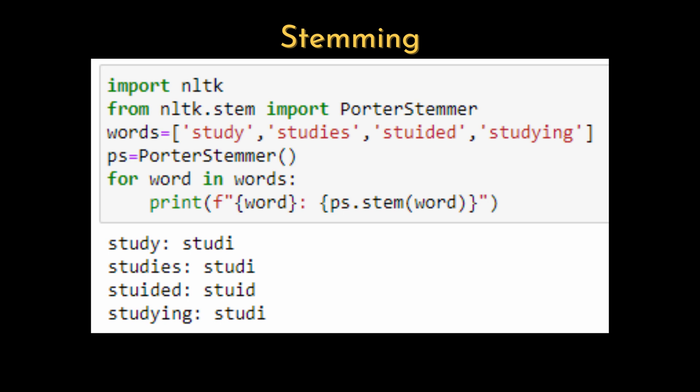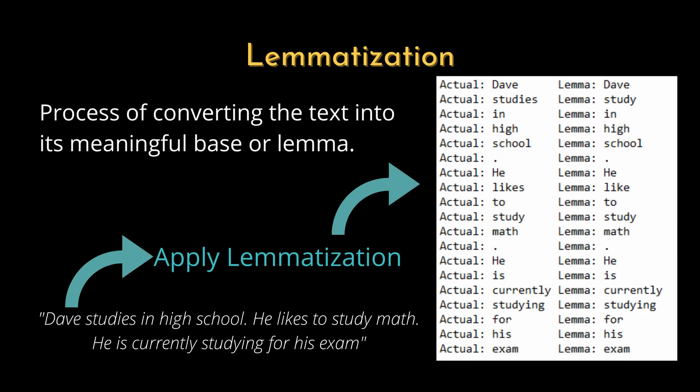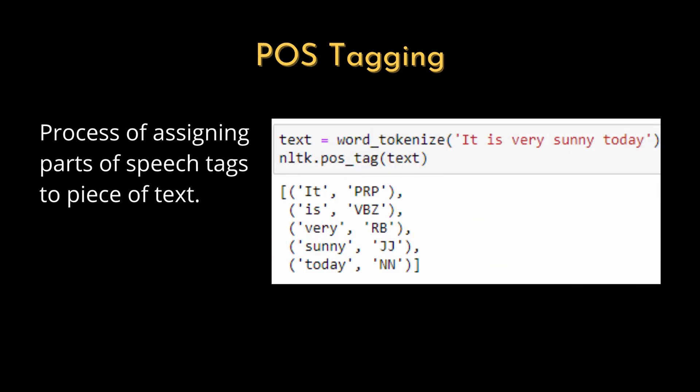Feel free to pause the video to check out the examples. Lemmatization: Lemmatization is the process of converting text into its meaningful base form or lemma by considering its context. It is similar to stemming, but unlike stemming, lemmatization depends on correctly identifying the intended part of speech and meaning of a word in a sentence as well as the surrounding context. Lemmatization maintains a whole word as a lemma rather than converting it to a root form. Part of Speech Tagging: POS tagging, also known as grammatical tagging, is the process of assigning parts of speech — such as noun, verb, adjective, etc. — to words in a text. It helps understand how a word functions in a sentence, both in terms of meaning and grammar, since a word can have more than one meaning depending on context and part of speech.